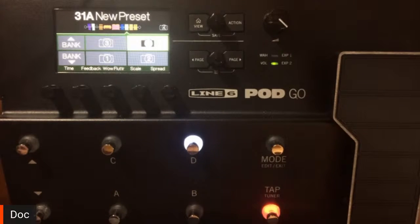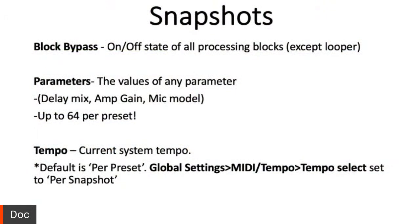That's one of the deeper editing things with snapshots. Let's do a quick review — what are snapshots? Basically, they let you seamlessly change between different sounds within a preset. It's almost like having a preset within a preset. You can affect the state of a block, whether it's on or off — this excludes the looper. You can change the parameters of any of these blocks: anything controlled by knobs one through five below the PodGo screen can be assigned to a snapshot. That can mean the mix of your delay, your amp's gain, even the mic model. Up to 64 of these things can change per preset — so that's really powerful.